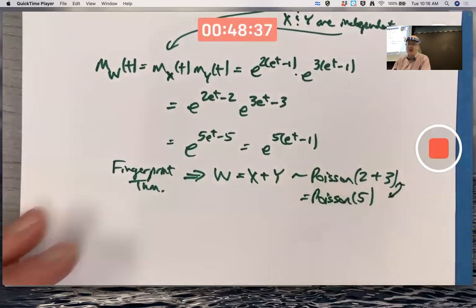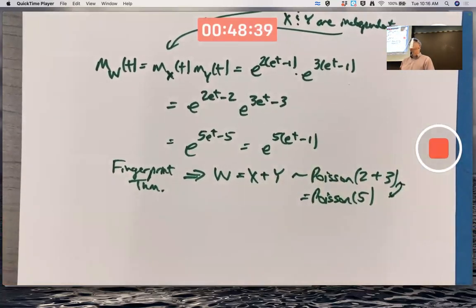And 5, hey, is 2 plus 3. So yes, I did add the means of the individual random variables.